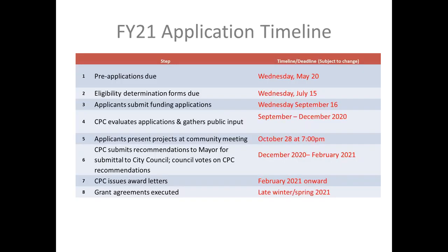This shows the timetable for the FY21 application process. Dates have been put in red because they are likely to change because of the current COVID-19 situation. These are tentative dates — they are the dates that would have followed if we did not have this crisis. I'll give an overview and then dig a little deeper into the next steps.